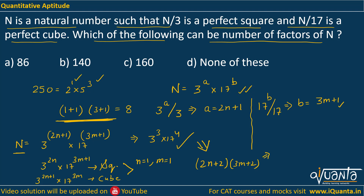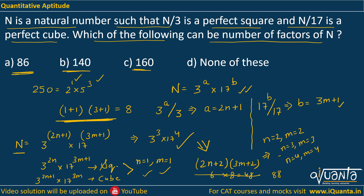Now we check which option values are achievable. Putting n = 2, m = 2 gives (6)(8) = 48, which is not in the options. Putting n = 3, m = 3 gives (8)(11) = 88. Putting n = 4, m = 4 gives (10)(14) = 140.